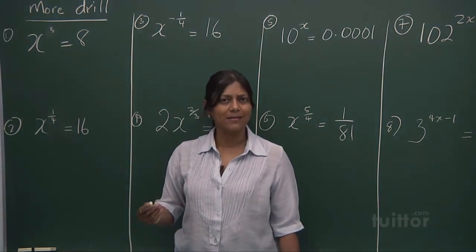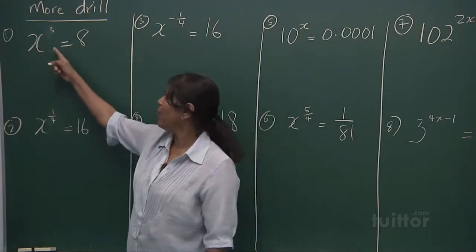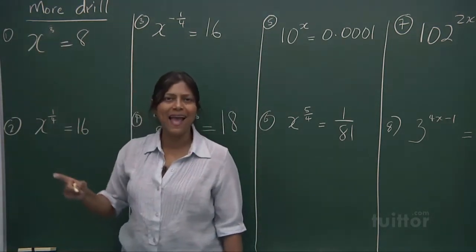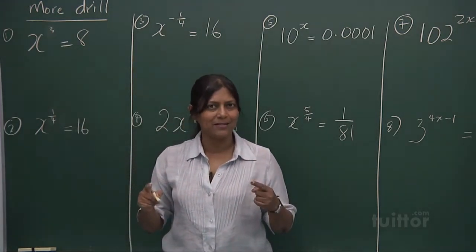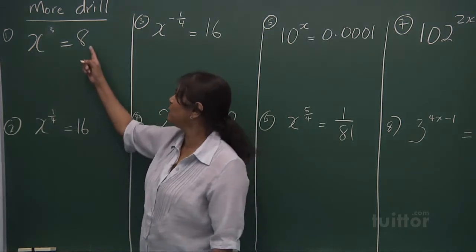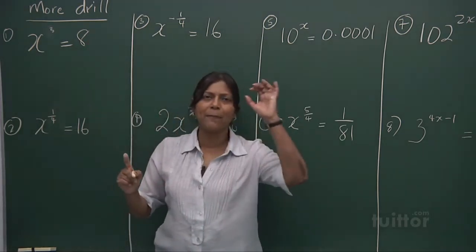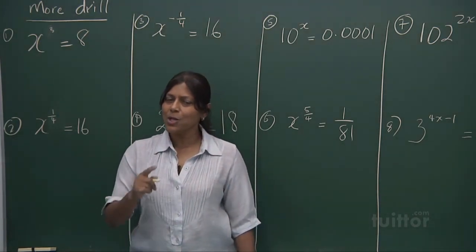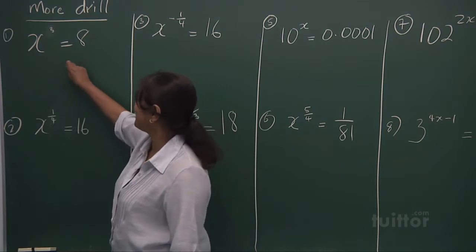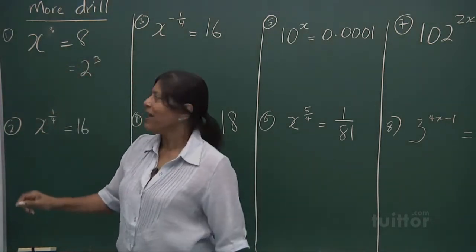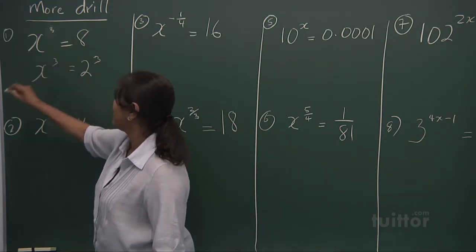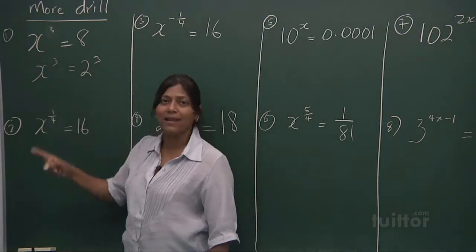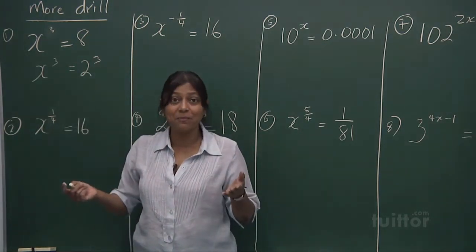What is x? Now, earlier on we had the powers up, but now the number we need to find is x. A little different. What we need to do is create a power that is 3. You know that 8 is 2 to the power of 3. And once you've seen that link and created that link, x must be 2.